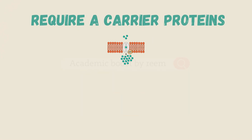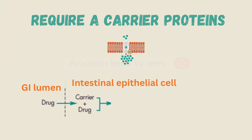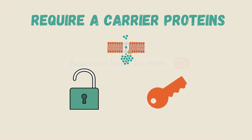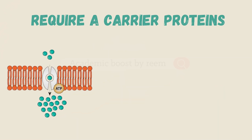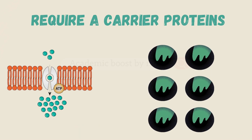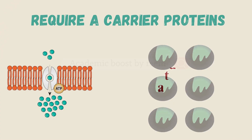Starting in the GI lumen, the free drug binds with its specific carrier to form a complex that then dissociates, releasing the drug into the blood while the carrier is freed again. This process works like a lock and key — the drug must perfectly fit the carrier binding site. But carriers are limited, and once every binding site is occupied, the system becomes saturated.